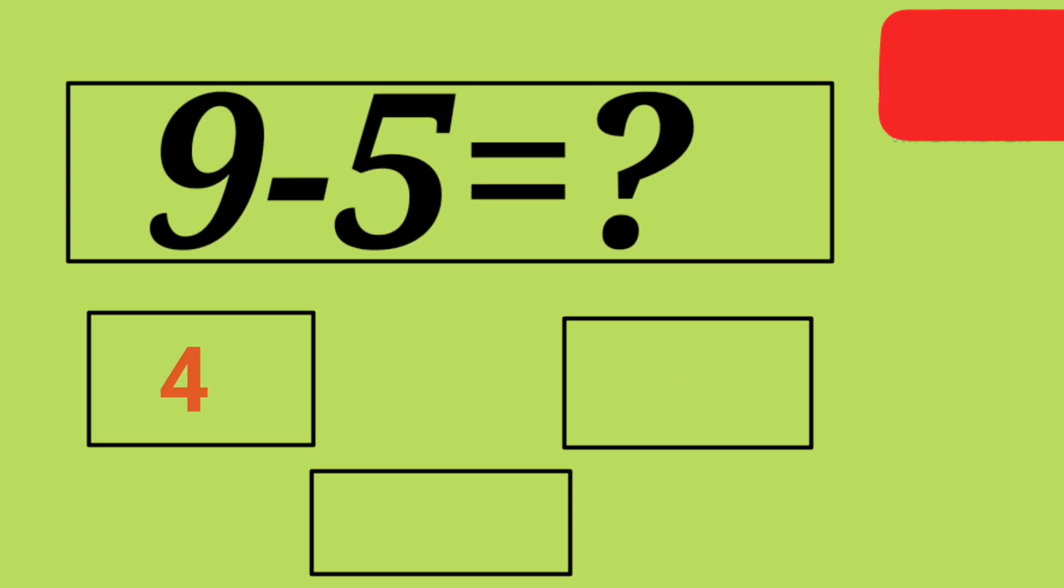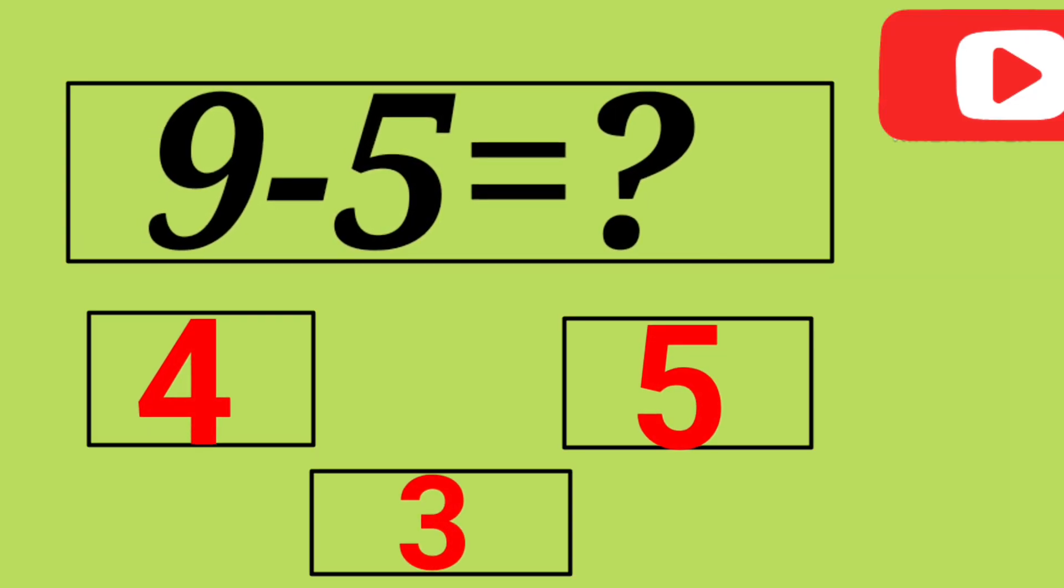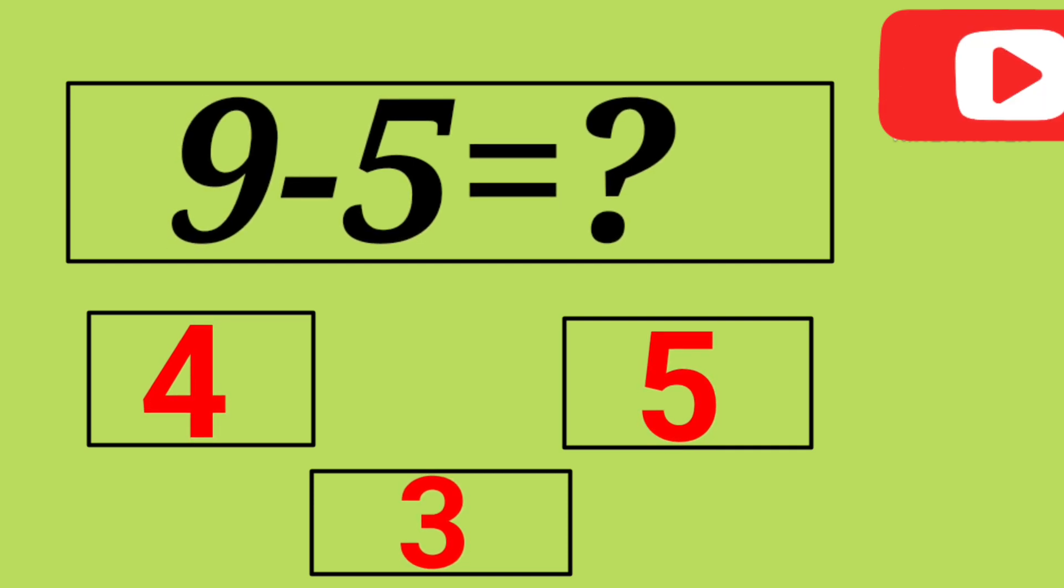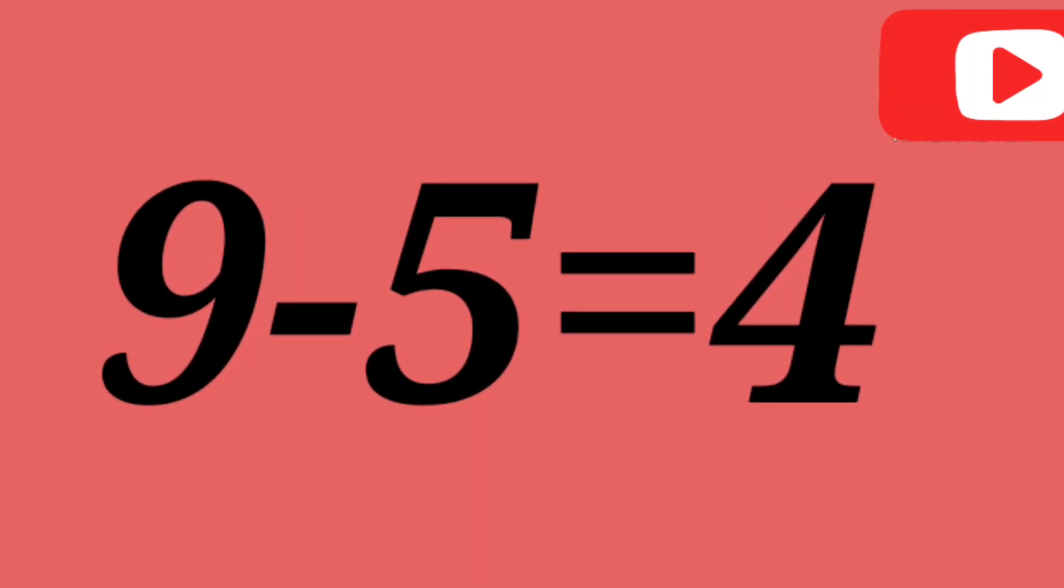9 minus 5 is 4, 5, 3! Yes! 4! 9 minus 5 is 4!